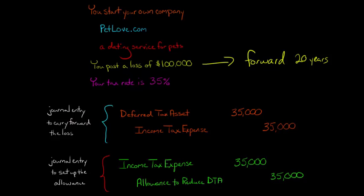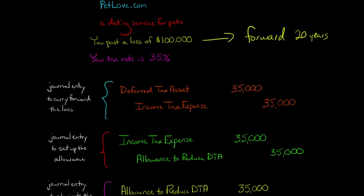It doesn't have to be a situation where the allowance is set up for the entire amount. It could be that the accountant says you'll have a little bit of taxable income, but not $100,000 worth. In this example, we'll just assume it's the full $100,000.